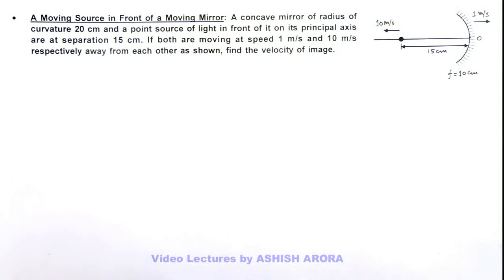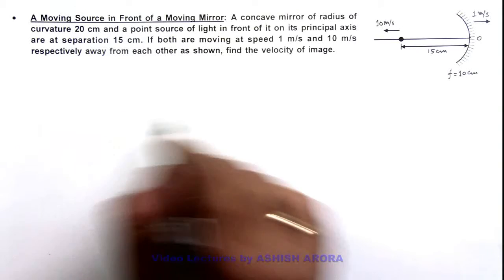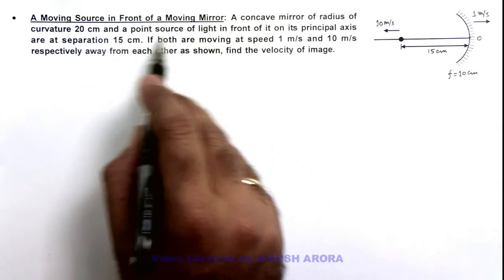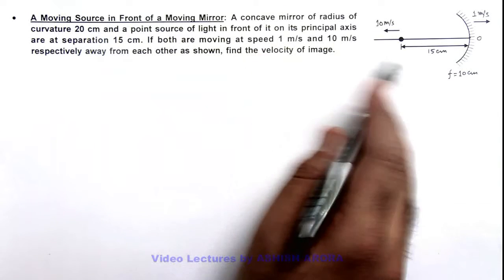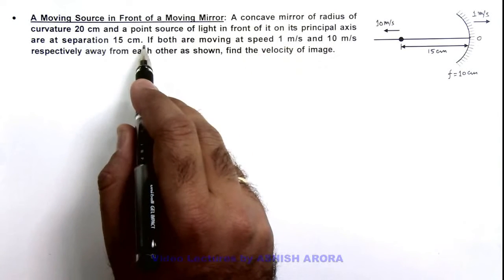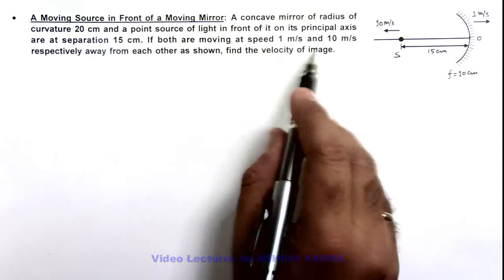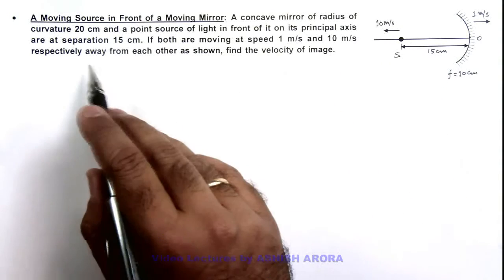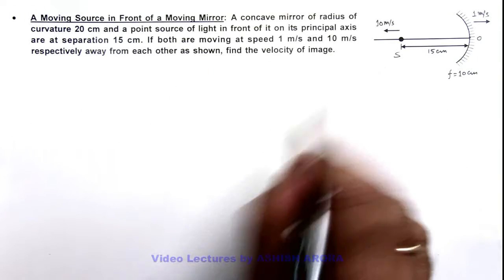In this illustration, we'll analyze a moving source in front of a moving mirror. We are given a concave mirror of radius of curvature 20 centimeters and a point source of light in front of it on its principal axis at a separation of 15 centimeters. Both are moving at speeds of 1 meter per second and 10 meters per second respectively, away from each other. We are required to find the velocity of the image of this source.